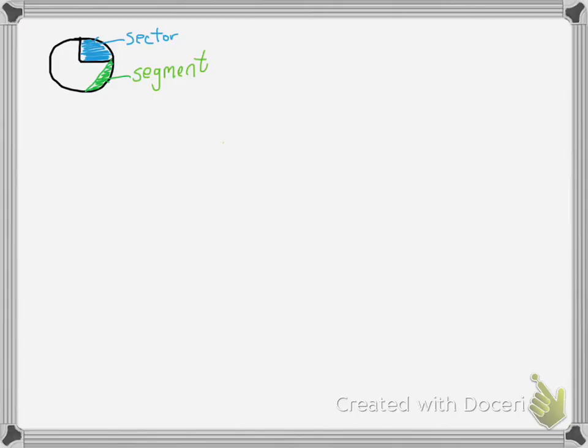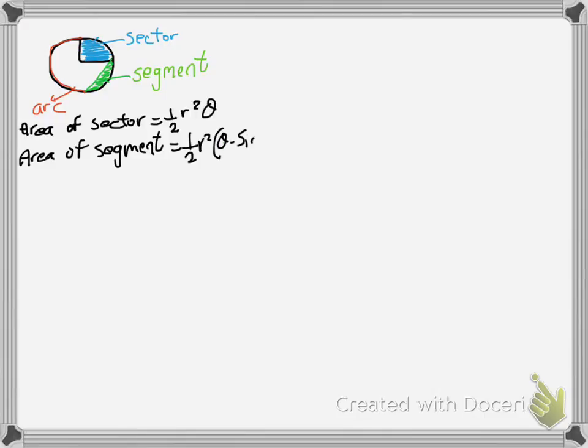It's very important that you know the formulas to calculate the length of arc, area of sector, and area of segment. We're using theta or the angle. Area of sector equals half r squared theta. Area of segment equals half r squared times (theta minus sine theta). Arc length equals r theta.